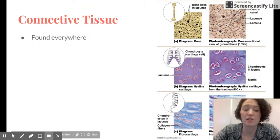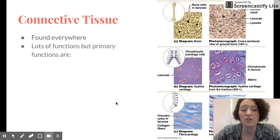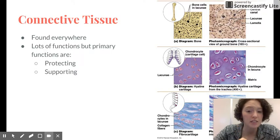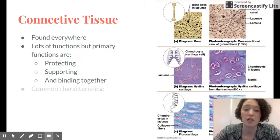Connective tissue is found everywhere. It's the most abundant and most widely distributed tissue in the entire body. It's involved in protecting things, supporting things, and binding things together. That's generally what connective tissue does.